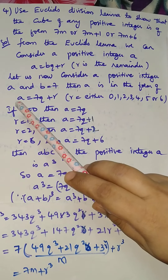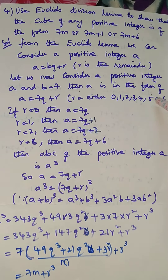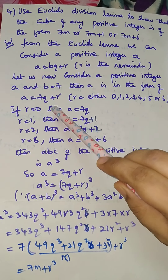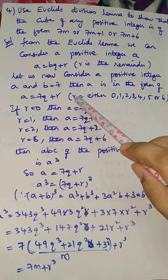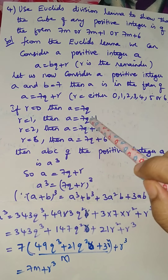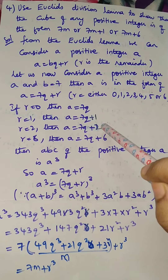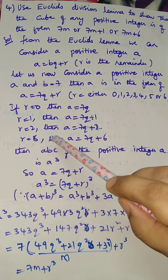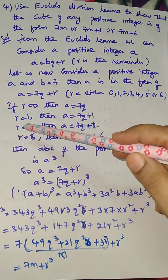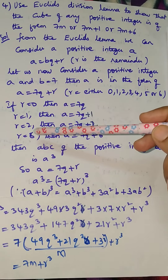Then a is in the form of a equals 7q plus r. r equals either 0, 1, 2, 3, 4, 5, or 6. If r equals 0, then a equals 7q. If r equals 1, then a equals 7q plus 1. If r equals 2, then a equals 7q plus 2. If r equals 6, then a equals 7q plus 6. As we want the answer in terms of 6, we are taking up to r equals 6 directly.